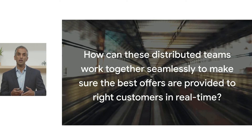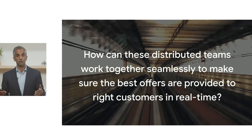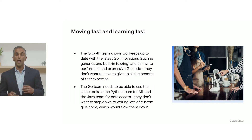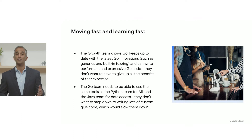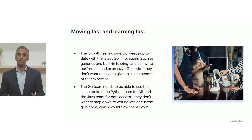So how can these teams distributed all across the world work together seamlessly to make sure that the best offers are presented to their customers in real time? The growth team knows Go — they love it. They stay up to date with the latest innovations such as Go generics and built-in fuzzing, and they can write performant and expressive Go code. There's no reason for them to give that up to solve these new business problems. They need to leverage that Python ML expertise in the Berlin office and work with the Java team to get the widest range of inputs into their models. This team doesn't want to step down to writing lots of custom glue code because that would only slow them down and doesn't deliver the value they're looking to provide as a new team.